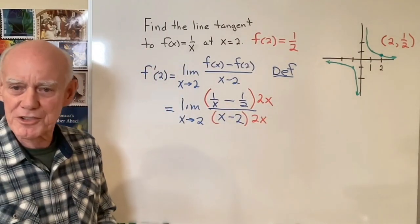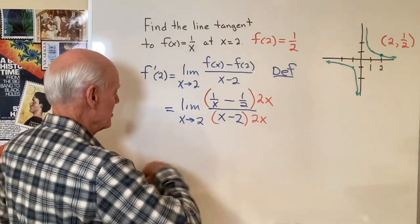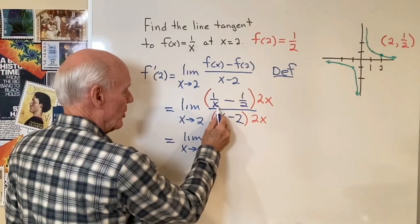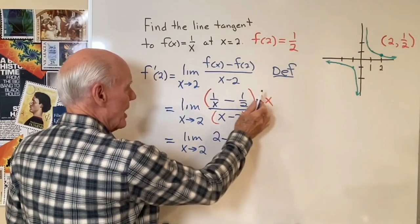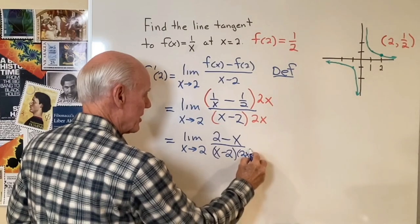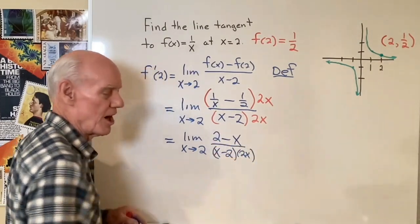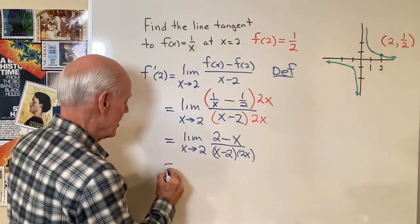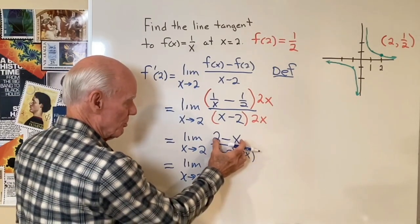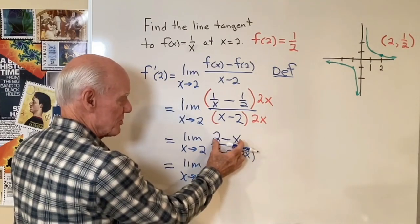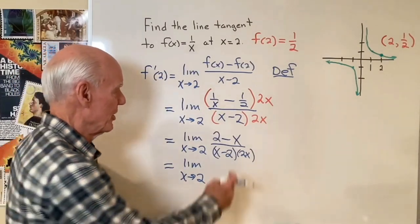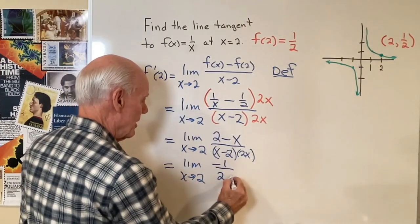I've really multiplied by the number 1, so I haven't changed the value of that expression. So now this becomes the limit as x goes to 2 of: 2x times 1 over x is going to be 2, and 2x times 1 over 2 is going to be x, over x minus 2 times 2x. I won't actually multiply that out because I see there's going to be a common factor in the numerator and denominator. When I divide x minus 2 into 2 minus x, I get negative 1, because 2 minus x is really negative 1 times x minus 2. So when I divide out that common factor x minus 2, I end up with negative 1 in the numerator — so negative 1 over 2x.